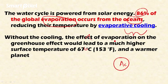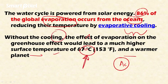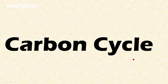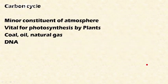The water cycle significantly reduces temperature on Earth. Without this evaporative cooling, the greenhouse effect would lead to a much higher surface temperature of 67°C, making the planet too warm to sustain life. This illustrates the importance of the water cycle.